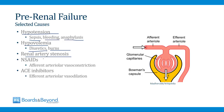Two drugs that are classic causes of pre-renal failure are NSAIDs and ACE inhibitors. When you give NSAIDs, you constrict the afferent arteriole, cutting off blood flow to the kidneys and causing pre-renal failure. When you give ACE inhibitors, you dilate the efferent arteriole, causing more blood to flow past the kidneys rather than going into the glomerulus and getting filtered. This has a similar effect to NSAIDs — less perfusion, less GFR, and therefore pre-renal failure can occur.